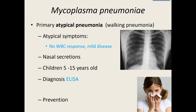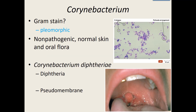The next group of gram-positive rods is the Corynebacterium. When we gram stain them, they're pleomorphic rods — some can be long rods, some can be short rods. A lot of them are part of your normal oral flora or even your skin, and in throat cultures you might have even identified a Corynebacterium. However, there is one main Corynebacterium that causes human disease: Corynebacterium diphtheriae, which causes the disease diphtheria.